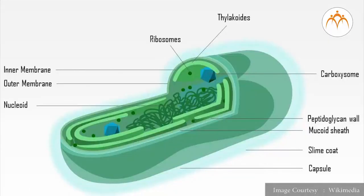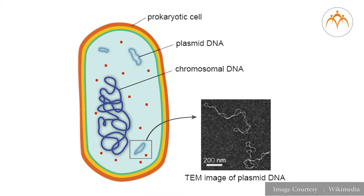In prokaryotic cells, genetic material is not packed inside the nucleus and organelles are not membrane bound, or in other words, the prokaryotic cell lacks a true nucleus. Organisms that have prokaryotic cells are unicellular and are called prokaryotes.